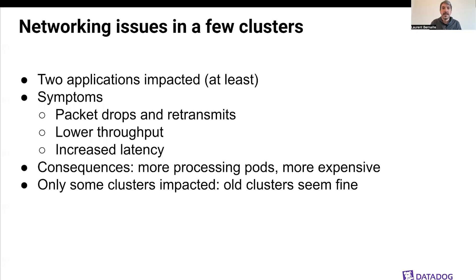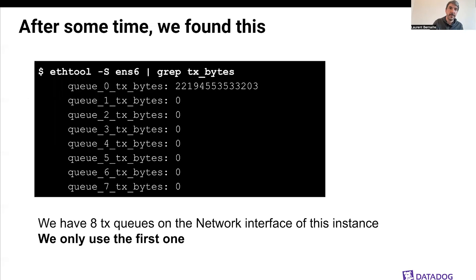What was interesting is that only some clusters were impacted — the old clusters seemed to be fine, and only the new ones were showing issues. We looked at the impacted applications and the nodes they were running on, and after some time we saw this weird behavior: ENS6 is the physical device used to egress the VM, and it provides eight transmit queues for better throughput. But as you can see, we're only using the first one, when we should be using all eight queues.